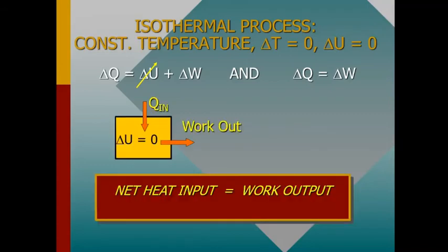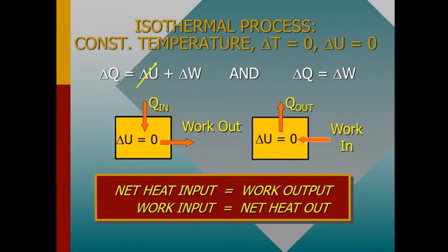Isothermal process: temperature is constant. Since internal energy depends only on temperature, delta U = 0. So from the first law, delta Q = delta W. All the heat supplied is completely converted to work done. Net heat input equals work output, and work input equals net heat out.